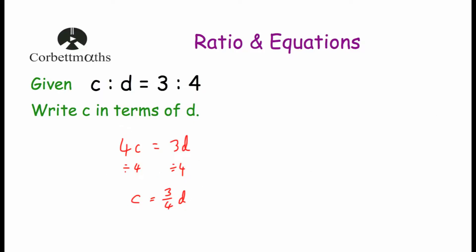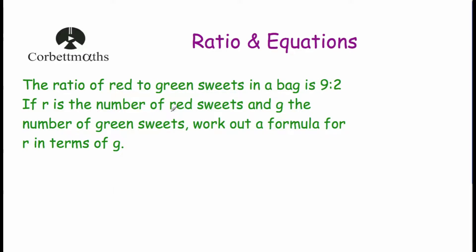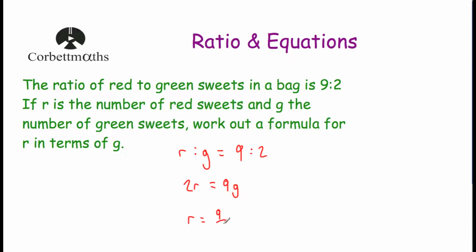Next question: the ratio of red to green sweets in a bag is 9 to 2. If r is the number of red sweets and g is the number of green sweets, work out a formula for r in terms of g. The ratio of r to g is 9 to 2. Take r and multiply by the g number in the ratio — 2 — giving 2r. Take g and multiply by 9 — the r number — giving 9g. To make r the subject, divide both sides by 2, giving r equals 9 over 2 times g, or equivalently r equals 9g over 2.